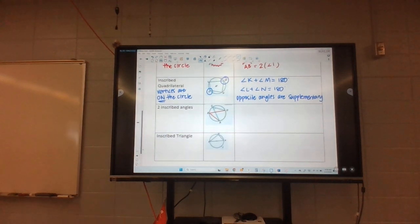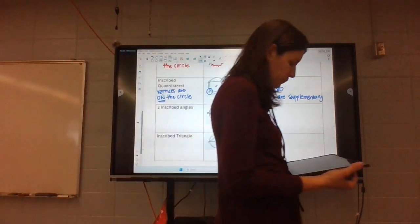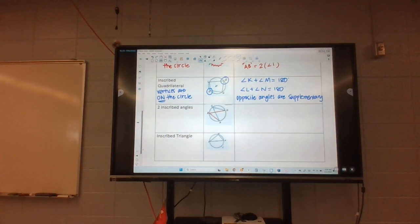All right, two more and then we'll take a break. Our next one are inscribed angles. So these are two inscribed angles. These two angles, they intersect the same arc. So the angles, if you look, these are both, both B and C are touching arc AD. So they're going to be equal.